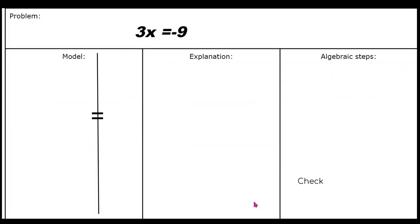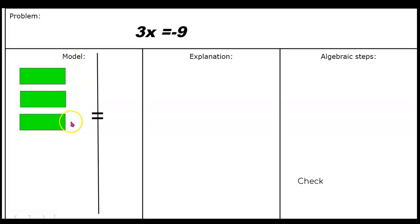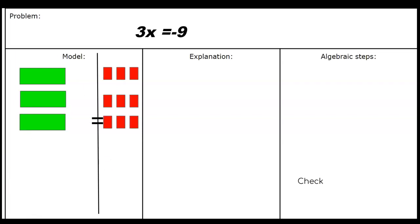Let's go to the next one. Write down the problem: 3x is equal to negative 9. Use your algebra tiles to model 3x equals negative 9, then pause the video. To model 3x equals negative 9, we show 3 green X tiles because 3x means 3 multiplied by X. On the other side of the equal sign, we have 9 negative tiles. So we have 3x is equal to negative 9.